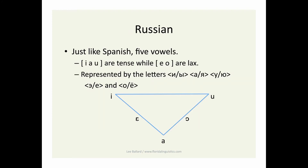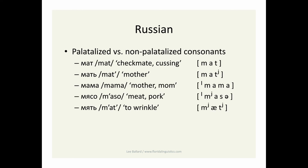Now let's move on to Russian. Russian vowels are a lot simpler than German — just like Spanish, there are five: I, A, U are tense, while E and O are lax. Because of the Russian consonant system, there are ten letters that represent five vowels. In Russian, most consonants are either palatalized or non-palatalized. Most non-palatalized consonants are actually velarized. Just like rounding the lips in English for U to distinguish it from the other high vowel E, palatalization and velarization in Russian is really about accentuating that contrast. Let's just call consonants palatalized and non-palatalized.